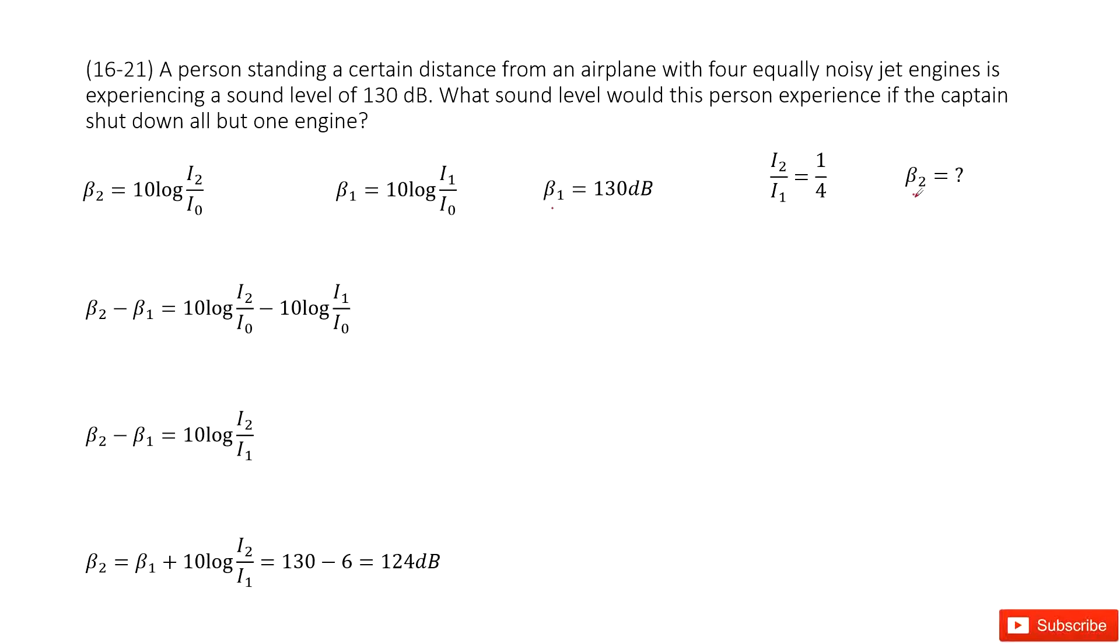Now you need to find beta 2. For beta 2, we have a function to connect sound level with the intensity. This is beta 1, this is beta 2. And we can write the difference between these two sound levels.